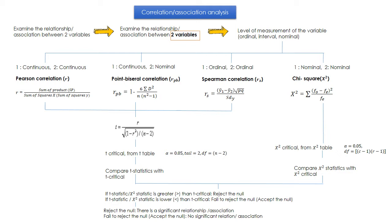Based on these two variables, we can run four different types of correlation analysis. Firstly, Pearson correlation. When do we run a Pearson correlation? When you have two variables that are continuous in nature — meaning these variables are measured using interval or ratio level of measurement. For example, motivation and job satisfaction — both are continuous variables, so you use the Pearson correlation approach.